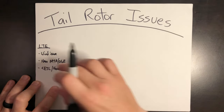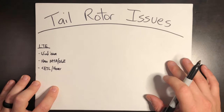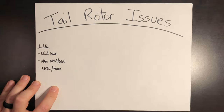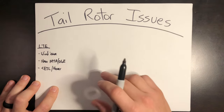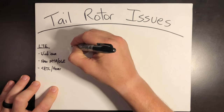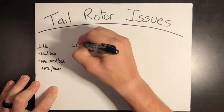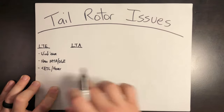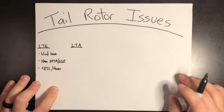If you have any questions on that, take a look at my video on it. The next type of tail rotor issue is what's known as loss of tail rotor authority, and it's going to be slightly different.